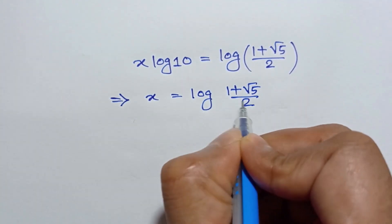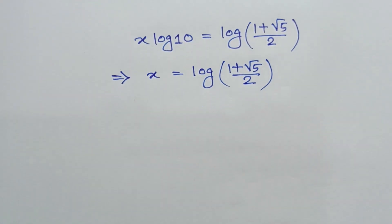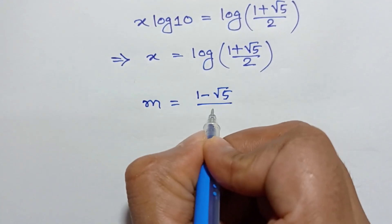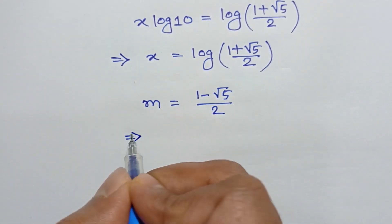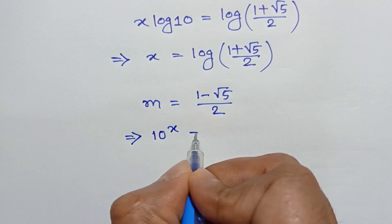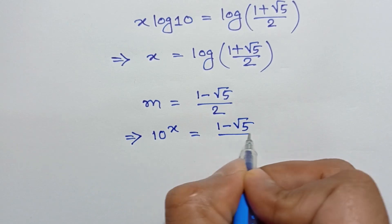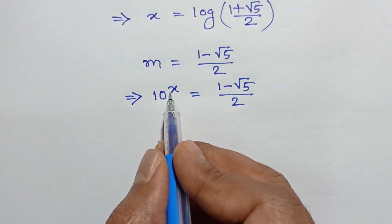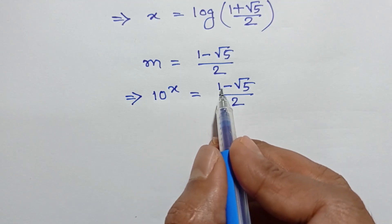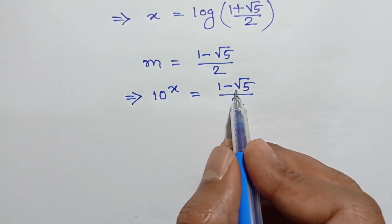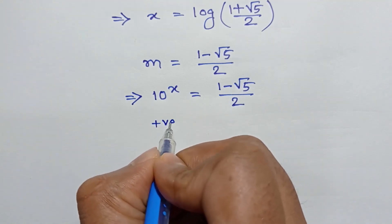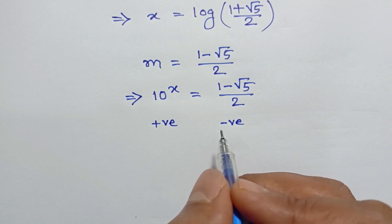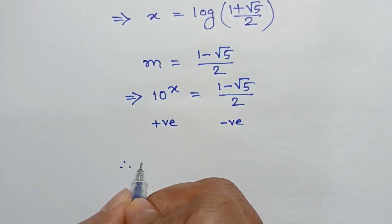Taking the negative case, we get m equals 1 minus square root of 5 over 2. Substituting m equals 10 to the power x, we get 10 to the power x equals 1 minus square root of 5 over 2. However, the power of a positive number is always positive, and 1 minus square root of 5 is always negative. So the left side is always positive and the right side is always negative, meaning there is no real solution in this case.